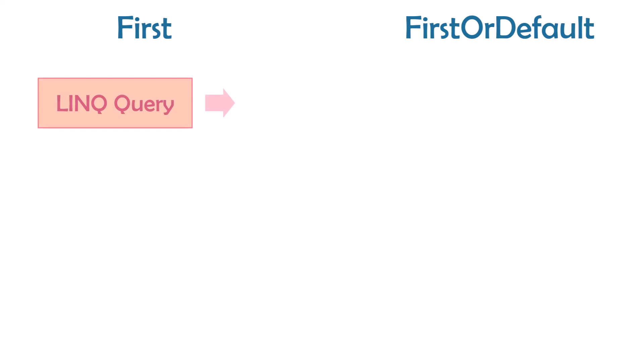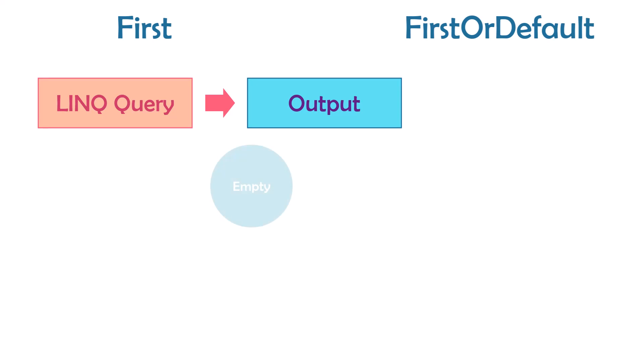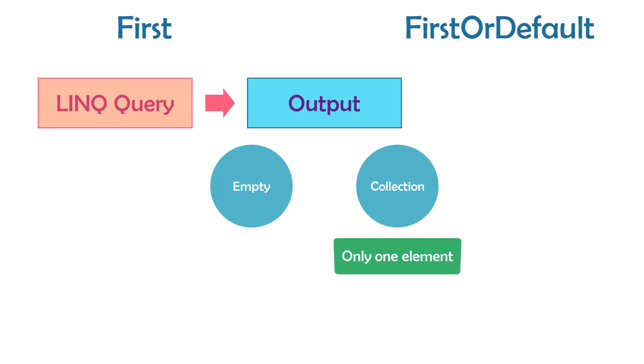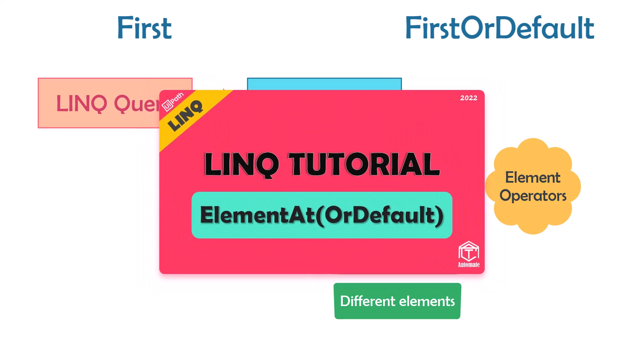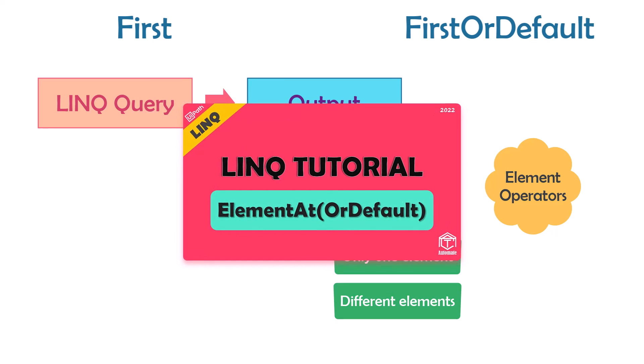In the first video about element operators I mentioned that each LINQ query has an output. This output could be empty or it could be a collection of elements. The collection could contain only one element or also more than one element. Sometimes we don't need to get all elements but only one specific element. To get a specific element we can use element operators, and we can also use them within the query to filter the data and get only one element. If you want to learn more about element operators you can check the following video, where I explained in detail what they mean and when to use them.